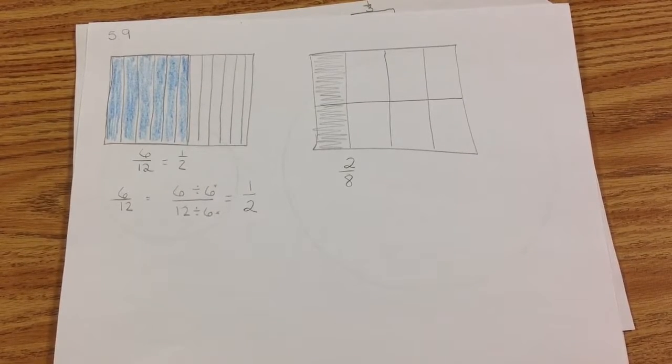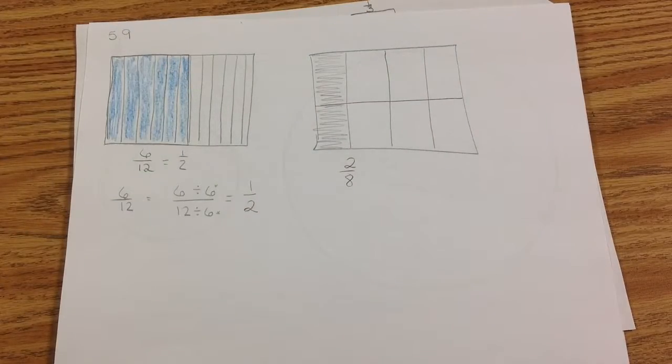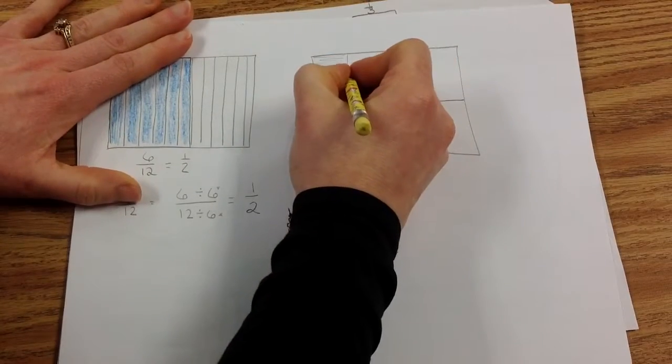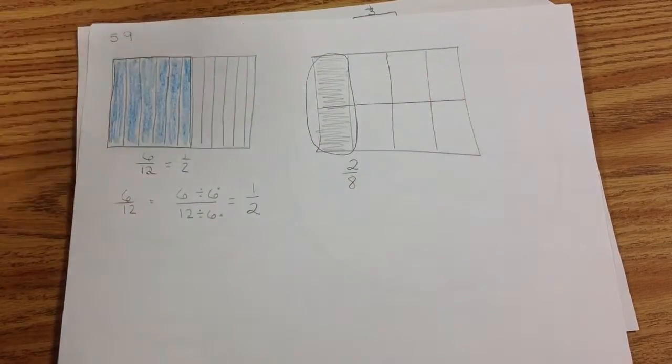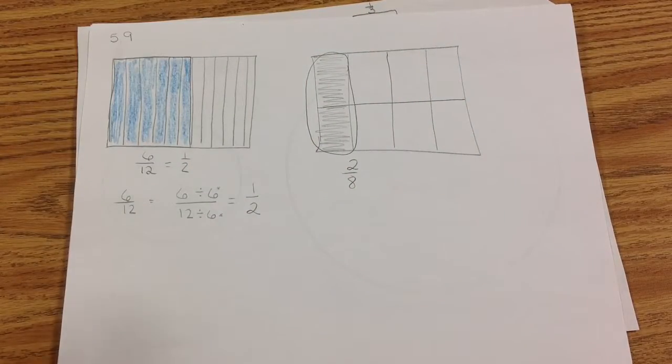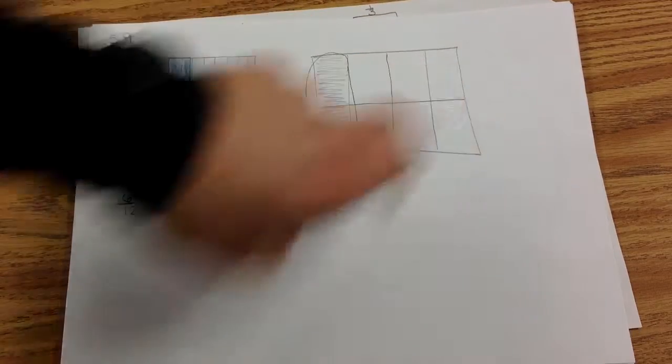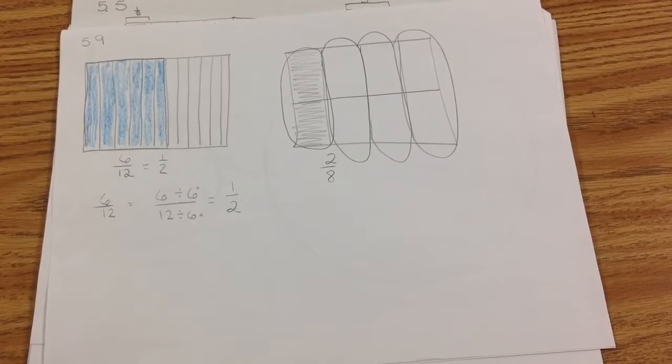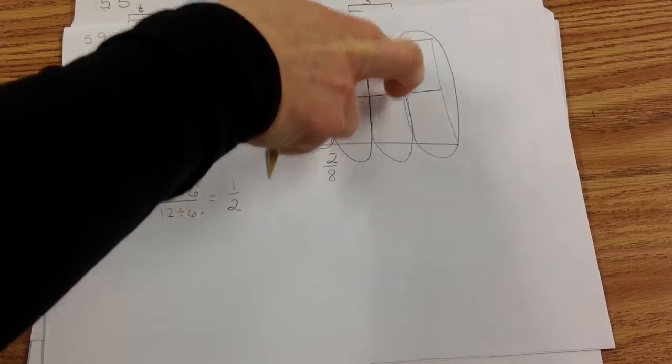You may have drawn something similar to this. I have 2 out of 8 pieces shaded. What we're going to do now is I want you to group 2 units together to make larger units. So it's going to look like this. You're going to group 2 units together. Try and go in the same direction. So I grouped my 2 shaded first. Continue grouping 2 units. So yours should look something similar to this, unless you went the other direction, but you should have groups of 2.